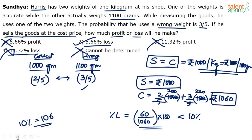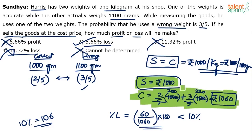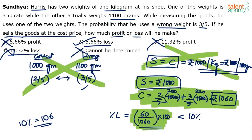In the exam, the only steps you need on paper are: selling price is fixed at 1000 rupees, cost price depends on the weights chosen — calculate it, then use the profit/loss formula. Do the arithmetic mentally. Don't waste time writing out every intermediate step. The final answer is option 2, 5.66% loss. This was a very interesting profit and loss question posted by Sandhya.